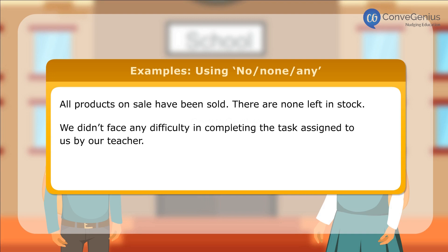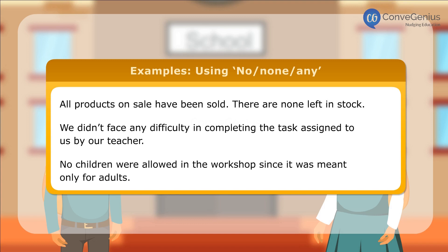Here are some more examples of sentences using no, none, and any: 'All products on sale have been sold — there are none left in stock.' 'We didn't face any difficulty in completing the task assigned to us by our teacher.' 'No children were allowed in the workshop since it was meant only for adults.'